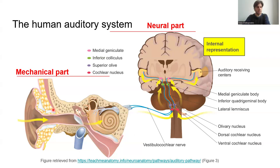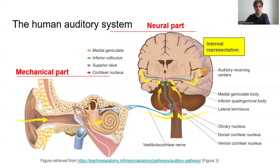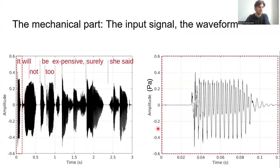The mechanical part I'm going to focus on in the coming slides is composed by the outer ear, middle ear, and the inner ear. In the inner ear is where sounds are decomposed into different frequency ranges before they are converted into neural patterns. Some of the models that we will show reach some kind of approximation of what is believed to happen at higher levels of the auditory system, going to the cochlear nucleus and inferior colliculus.